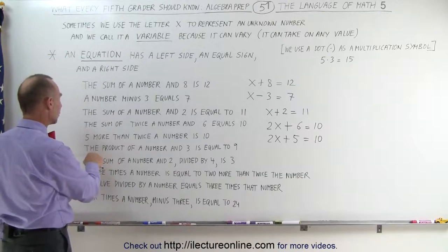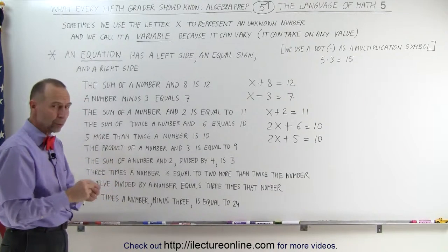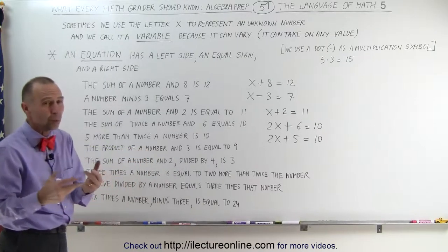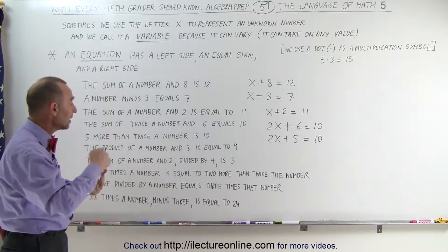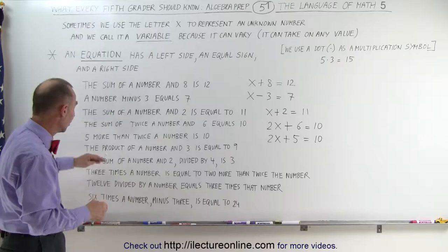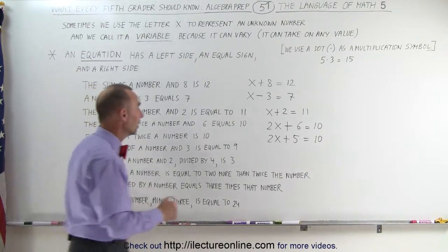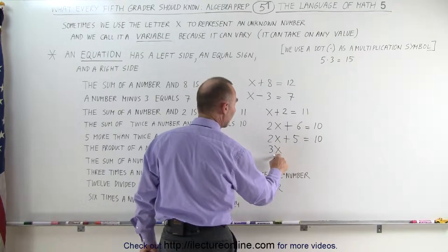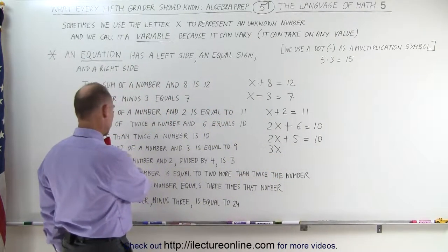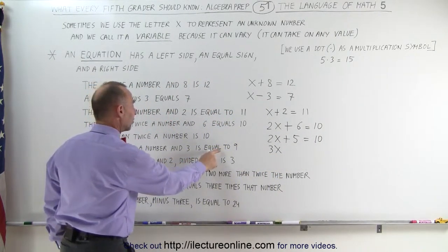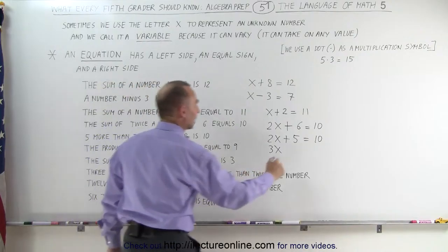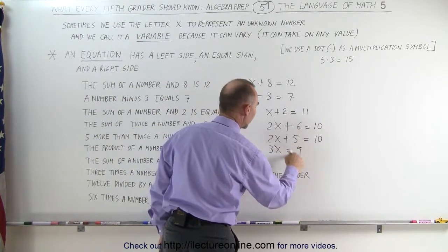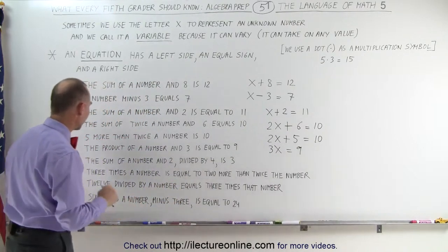The next sentence reads: the product of a number and 3. 'Product' means multiplication — we use a dot for that. The product of a number and 3 means 3 times x, or simply 3x. We say that that is equal to 9: 3x = 9, so 3 times the unknown number equals 9.